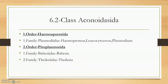The next class under phylum Apicomplexa is Aconoidasida, with two orders of interest. The first order is Haemosporida, under which the family Plasmodiidae contains genera Plasmodium, Leucocytozoon, and Haemoproteus. The second order is Piroplasmida, with two important families: Babesiidae for Babesia, and Theileriidae for Theileria.